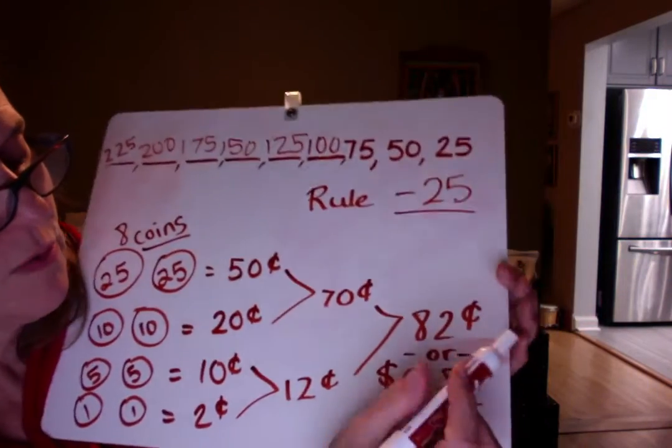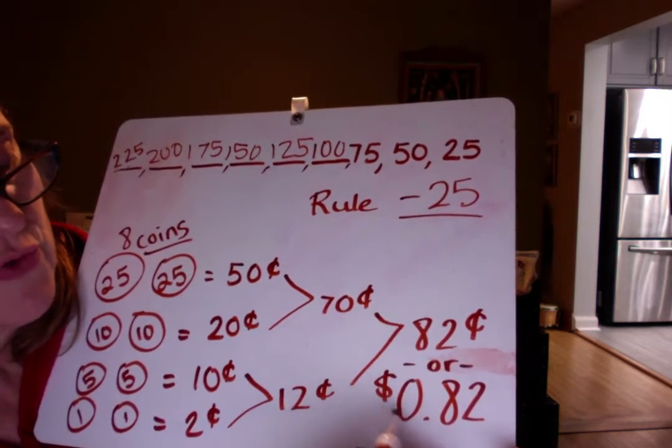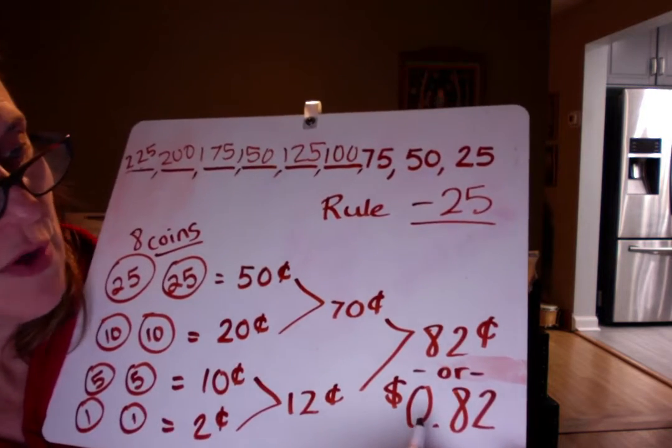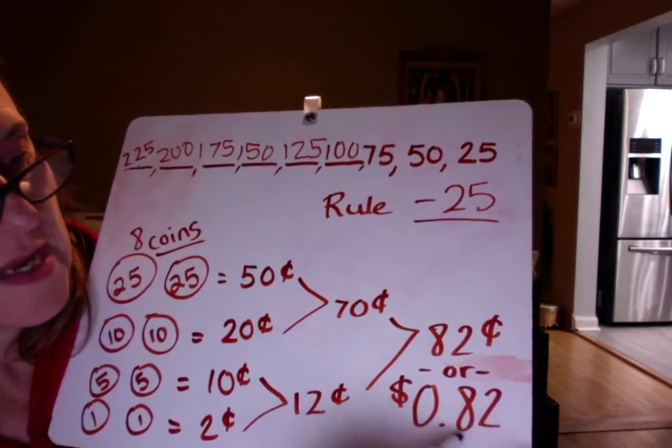And you either write it, well you have to write it both ways. 82 with a cent sign and the other way is a dollar sign. Zero dollars, there's no dollars, just 82 cents. Decimal and then 82 over here.